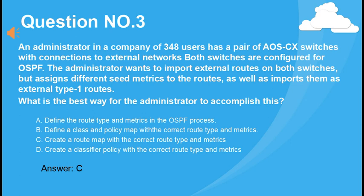An administrator in a company of 348 users has a pair of AOS-CX switches with connections to external networks. Both switches are configured for OSPF. The administrator wants to import external routes on both switches but assigns different seed metrics to the routes, as well as imports them as external type 1 routes. What is the best way for the administrator to accomplish this? A. Define the route type and metrics in the OSPF process. B. Define a class and policy map with the correct route type and metrics. C. Create a route map with the correct route type and metrics. D. Create a class and policy map with the correct route type and metrics. Answer: C.